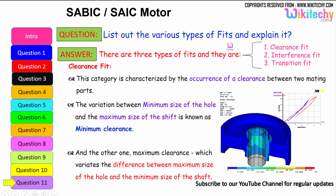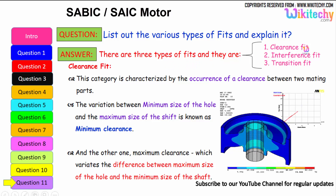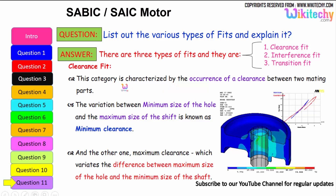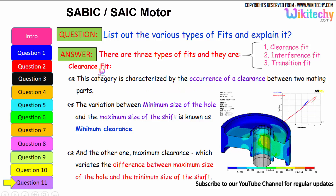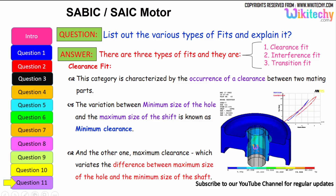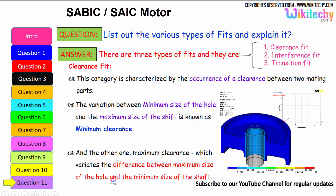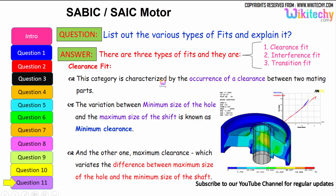List the various types of fits and explain them. There are three types of fits: clearance fit, interference fit, and transition fit. Clearance fit is characterized by the occurrence of clearance between the two mating parts. The difference between the minimum size of the hole and the maximum size of the shaft is known as minimum clearance, whereas maximum clearance is the difference between the maximum size of the hole and the minimum size of the shaft.